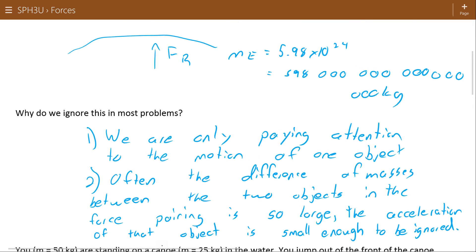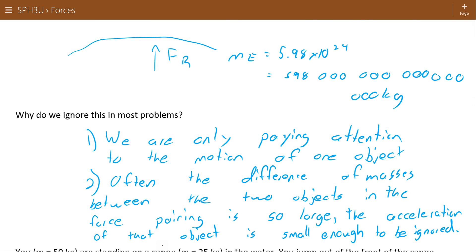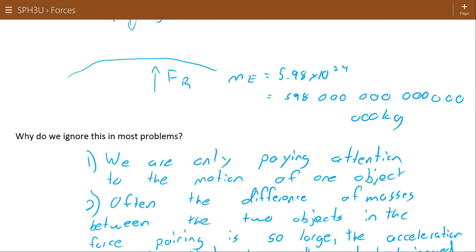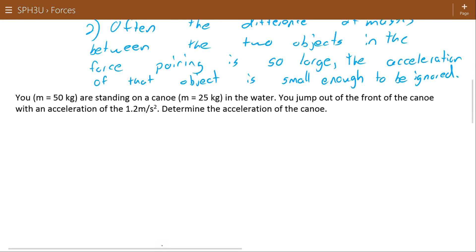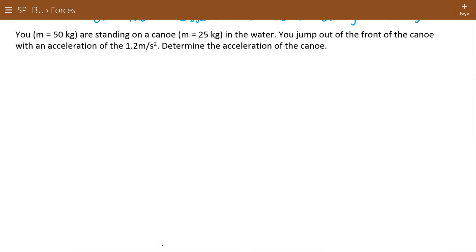Okay, but these things aren't always true. There can be situations where you're pushing against another movable object, and you would notice. So I think that's worth looking at some problems with. Here's an example. Let's say you're standing on a canoe. You have a mass of 50 kilograms, the canoe has a mass of 25 kilograms. You jump out the front of the canoe with an acceleration of 1.2 meters per second squared.